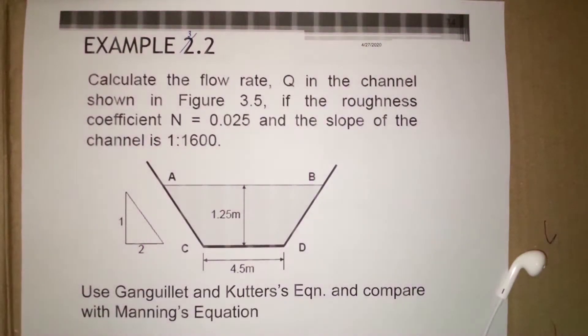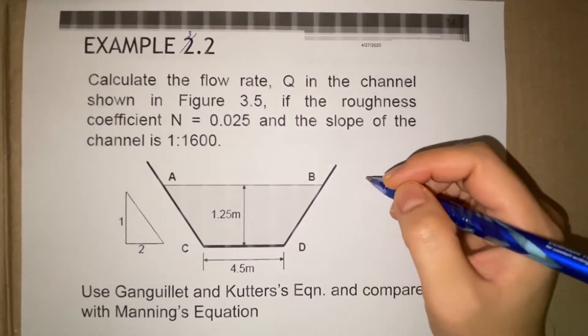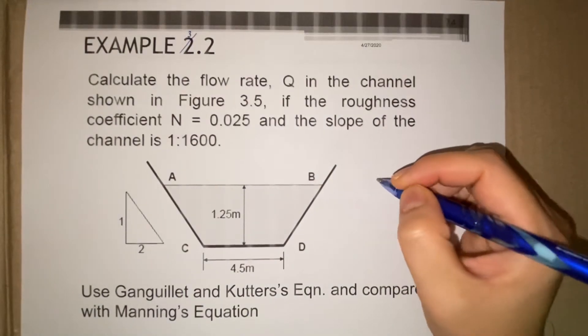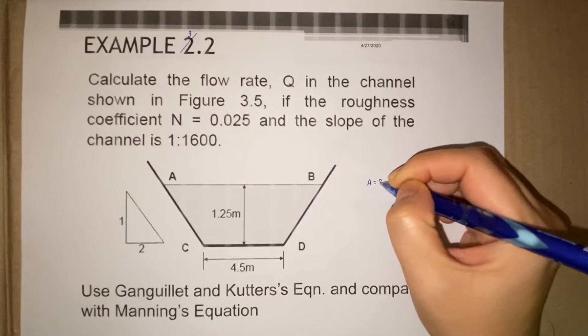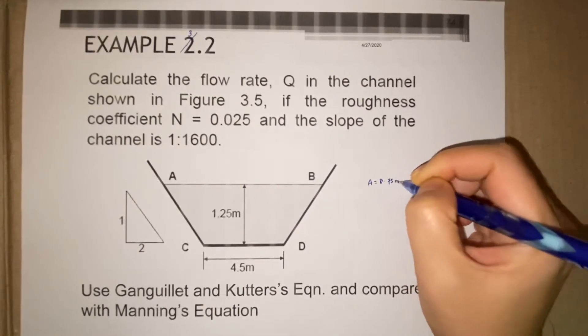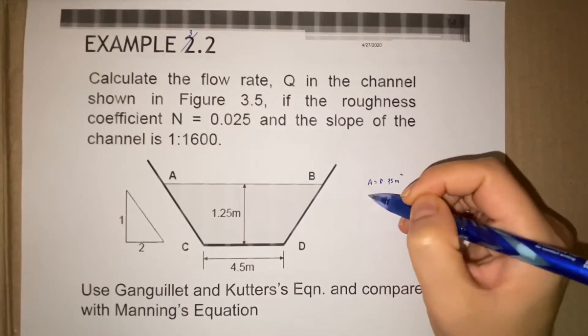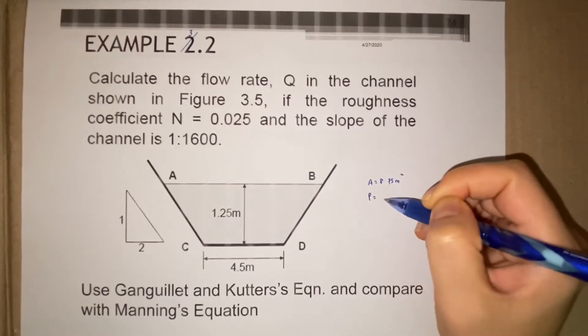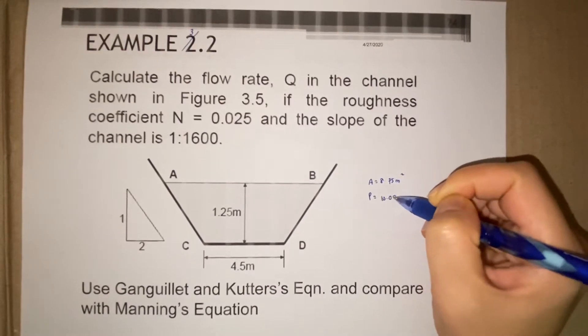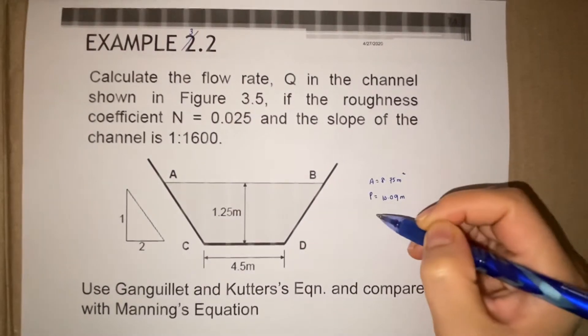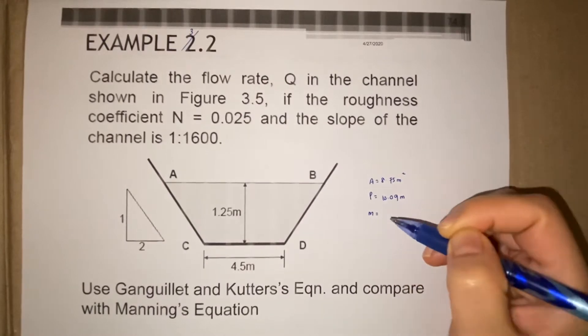Okay, Example 3.2. This example is the continuity from Example 3.1, whereby in Example 3.1 we have calculated that area is 8.75 meter squared, and then P is 10.09 meter, and then you have calculated that your hydraulic mean depth is 0.867 meter.